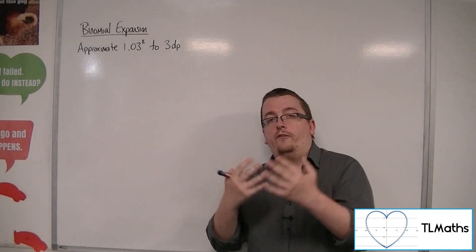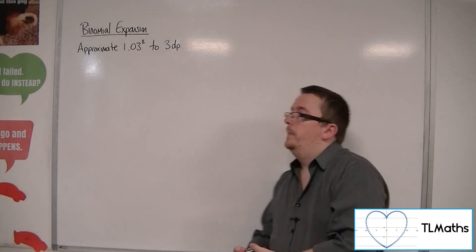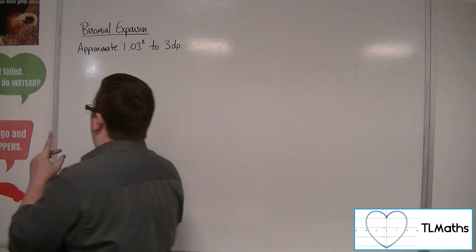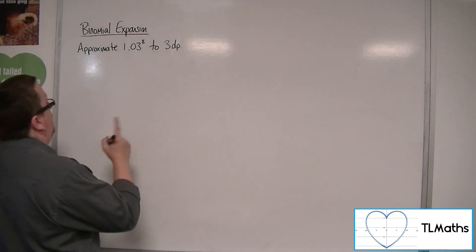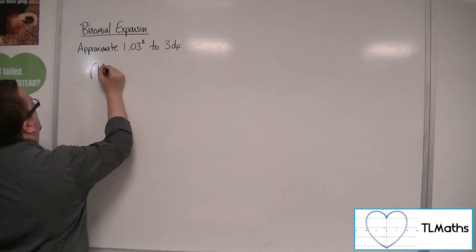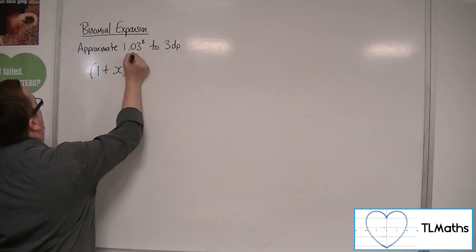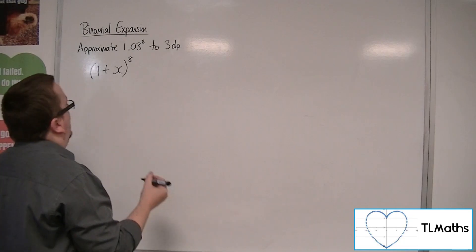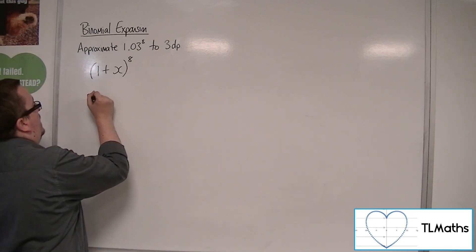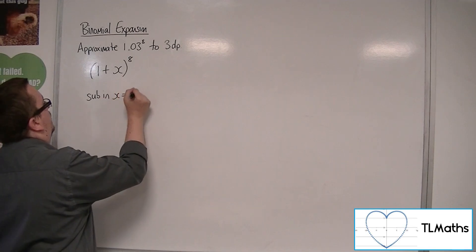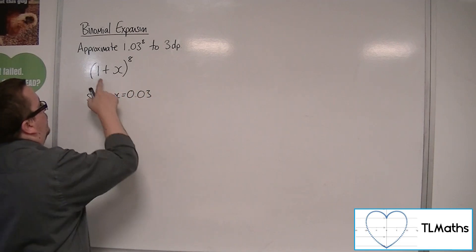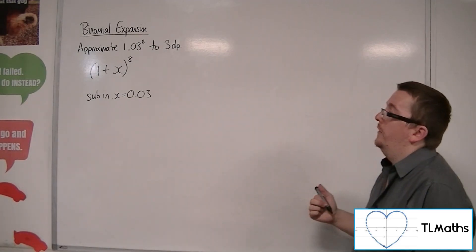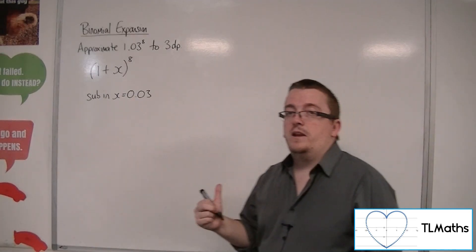It actually uses a form of binomial expansion. Okay, now it doesn't seem immediately obvious as to how that might work. But if I could work out what 1 plus x to the 8 was, then whatever that expansion was, I would then be able to sub in x equals 0.03, which into this would be 1.03 to the 8. And into the right-hand side, that would then give me what I need.